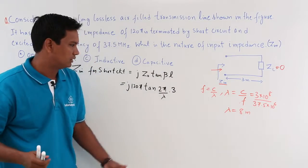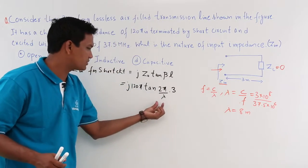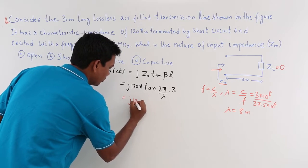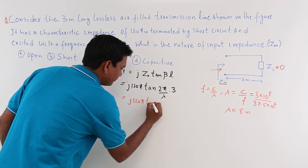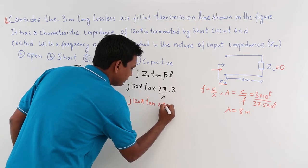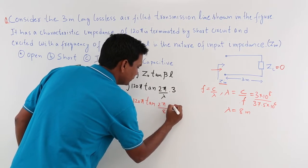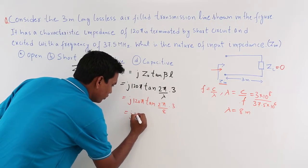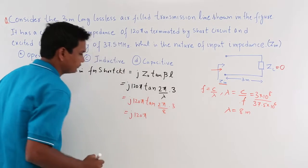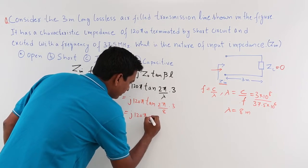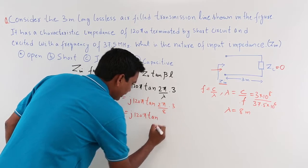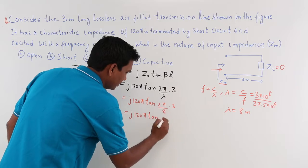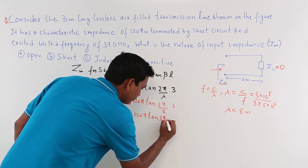So I got the lambda now. I can substitute the lambda here. I can proceed saying that j120π tan(2π/8 × 3). If I solve further it will become j120π tan(3π/4).